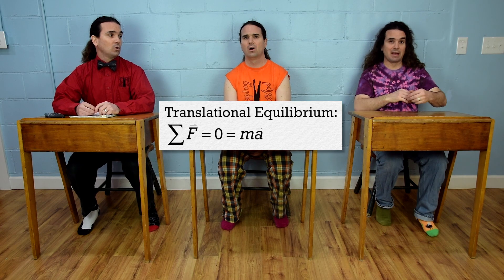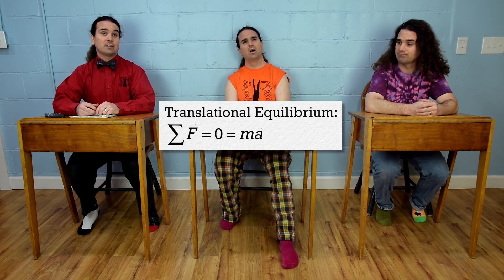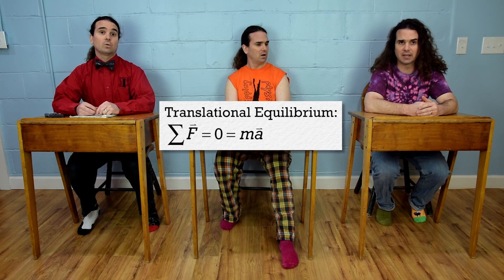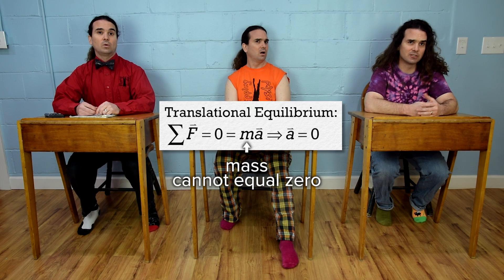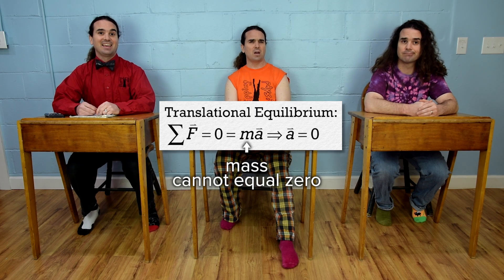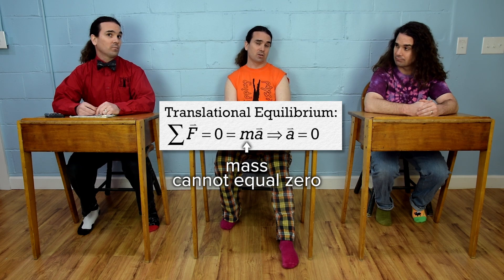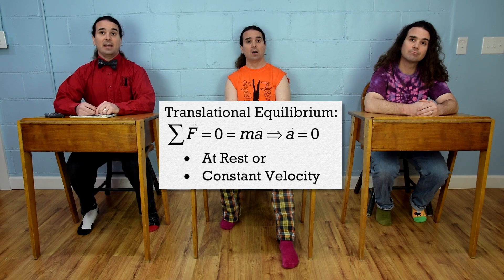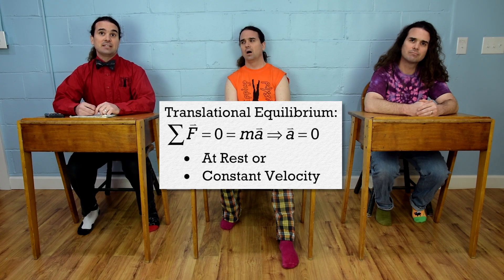Net force equals mass times acceleration — the translational form of Newton's second law of motion. So if the net force equals zero, the acceleration of the object equals zero, so an object in translational equilibrium is not accelerating. An object in translational equilibrium has no linear acceleration, so it could be at rest or it could be moving with a constant velocity. An object moving at a constant velocity has no acceleration, therefore the net force acting on it equals zero, so it is in translational equilibrium.